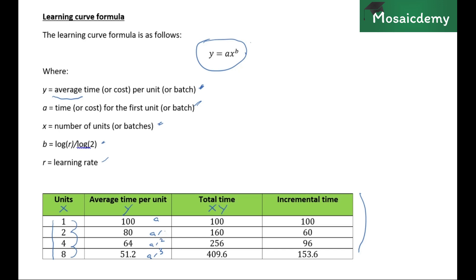Furthermore, to find the incremental time, we can now do it on a per unit basis. For example, this 96 is the incremental time for the next two units when producing four units, and 153.6 is the incremental time for the last four units in producing eight units. But with the formula, we can find the time for the third, fourth, fifth, sixth, seventh, eighth unit — all individually — by simply taking the total time for a number of units and subtracting the total time for one less unit. For example, for the eighth unit: total time of 8 units minus total time of 7 units. For the fifth unit: total time of 5 units minus total time of 4 units.